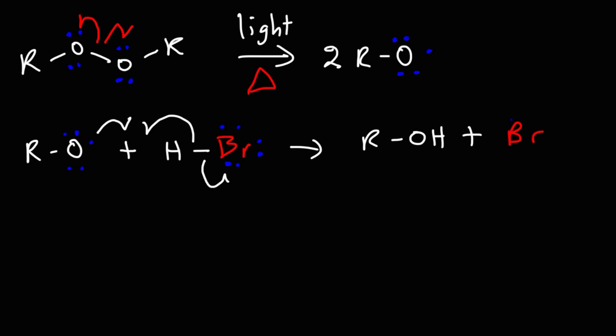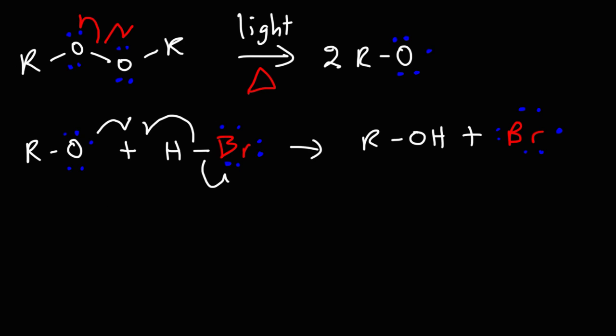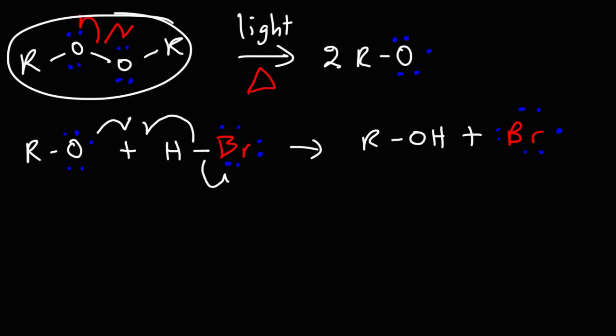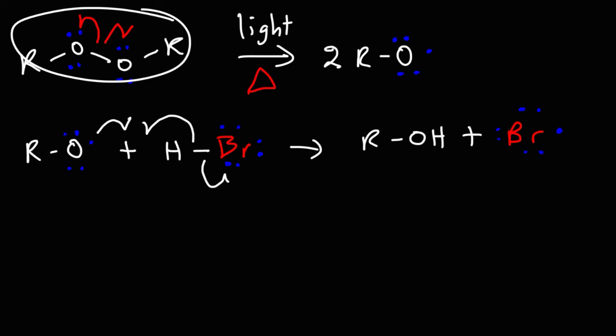So this is known as a propagation step. You start with one radical and you create another radical. This step here is known as initiation, because you're starting with a non-radical molecule and you're generating two radicals.